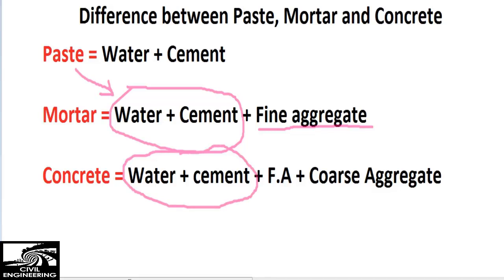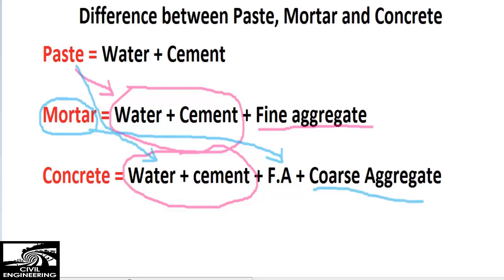Concrete involves the mortar — which is paste plus fine aggregate — as well as coarse aggregate. This extra material used in concrete makes it distinct from mortar. So we define concrete as the mixture of water, cement, fine aggregate, and coarse aggregate.